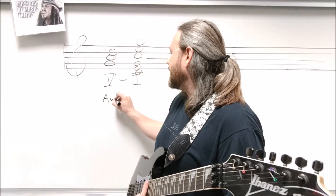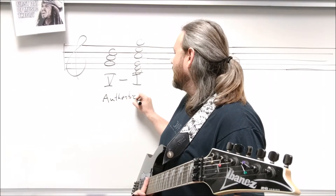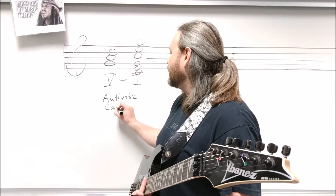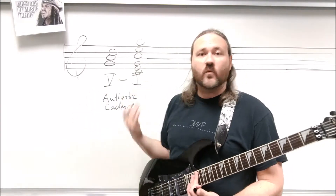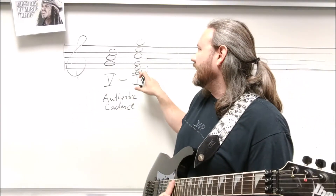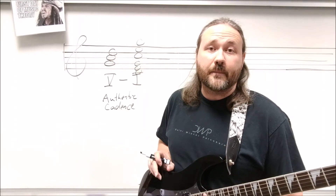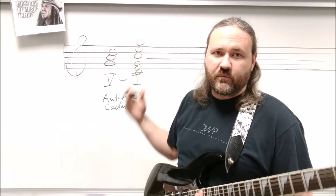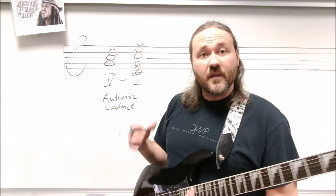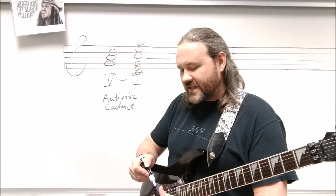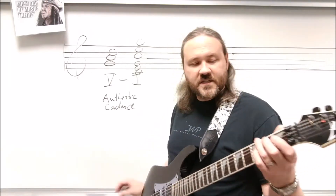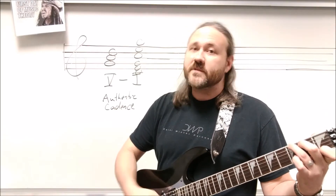There are actually several different types of authentic cadence — a perfect authentic cadence and imperfect versions. A perfect authentic cadence is a five-to-one resolution where both chords are in root position and you end up with the tonic in the soprano. The perfect authentic cadence is considered the strongest possible ending to a piece of music — that's the G7 to C cadence. Anyone who knows their chords: G7 to C, that's a five-one in C.